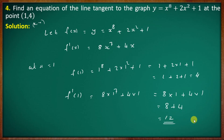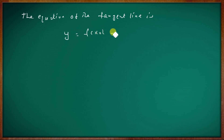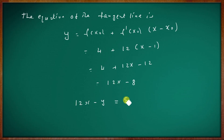The equation of the tangent line is y = f(x₀) + f'(x₀)·(x − x₀) = 4 + 12(x − 1) = 4 + 12x − 12 = 12x − 8. So the tangent line equation is y = 12x − 8.